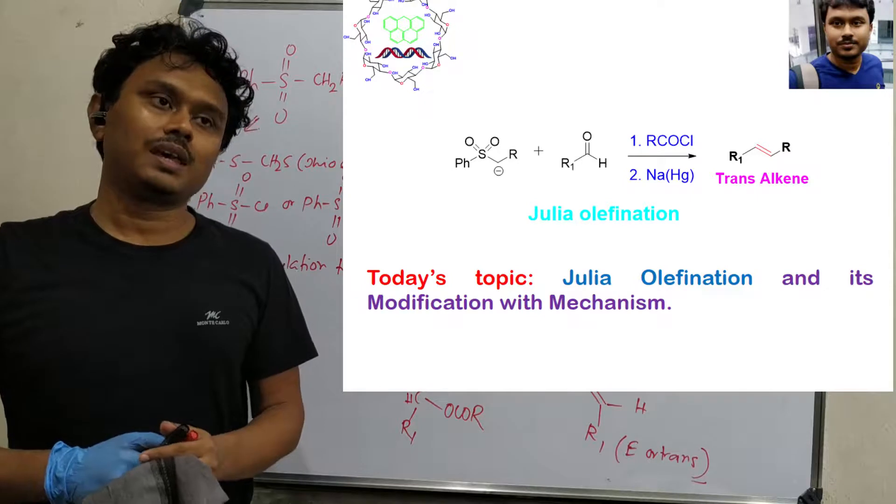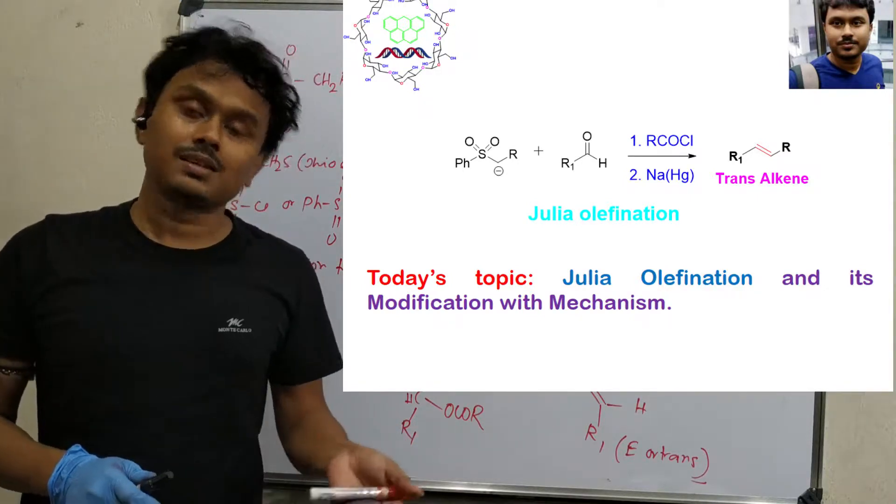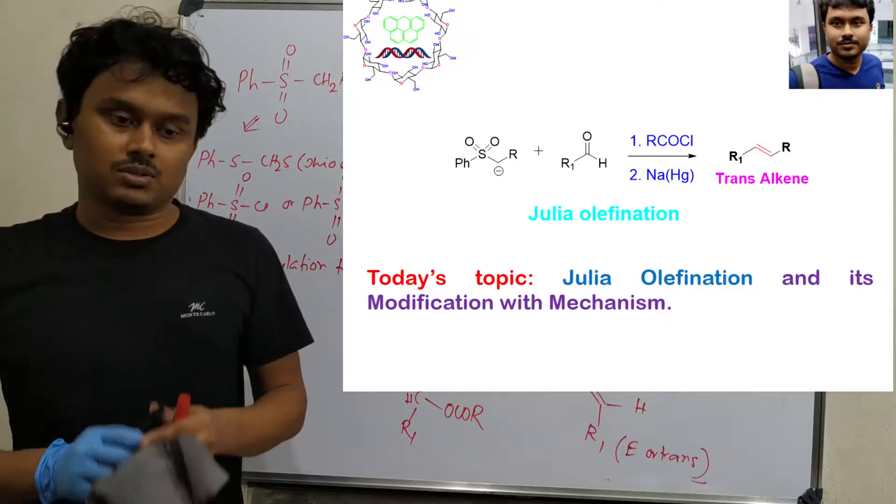This reaction proceeds through sulfur-stabilized carbonium ions, like in case of Wittig-Horner, which goes through phosphorus-stabilized intermediates. This is sulfur-stabilized.